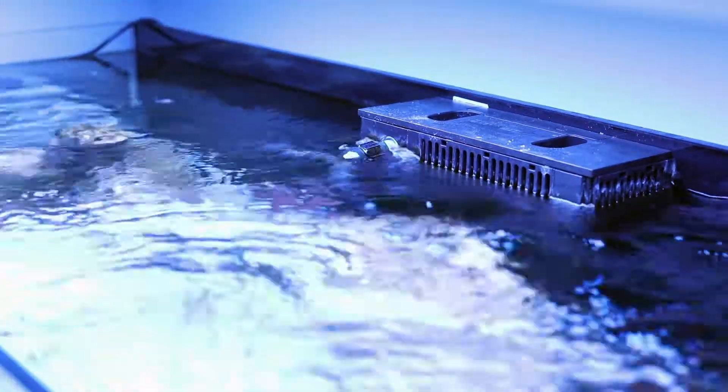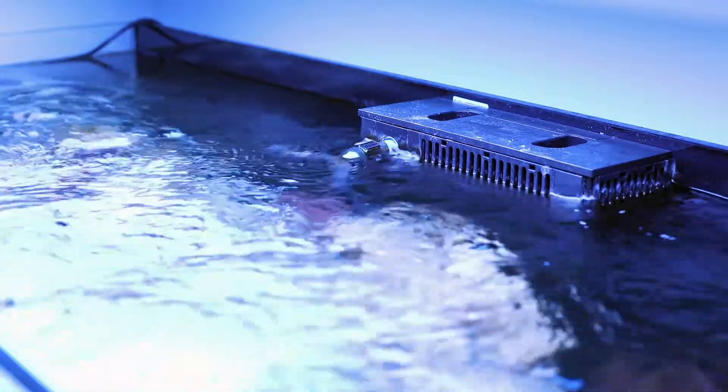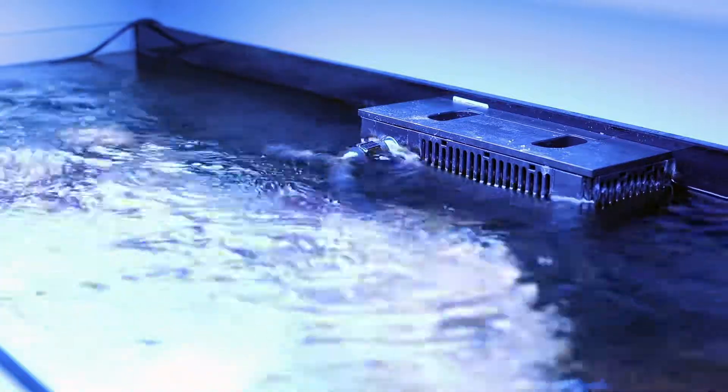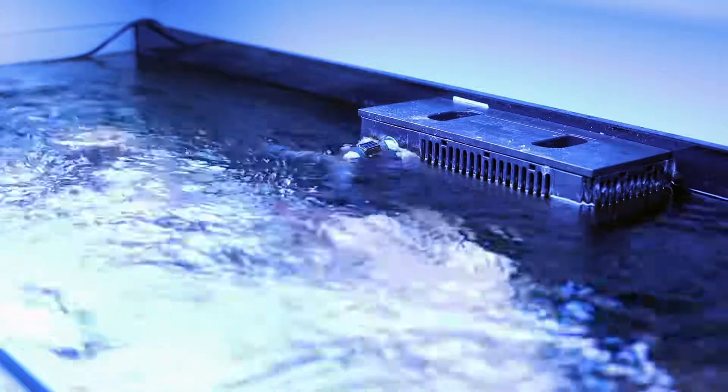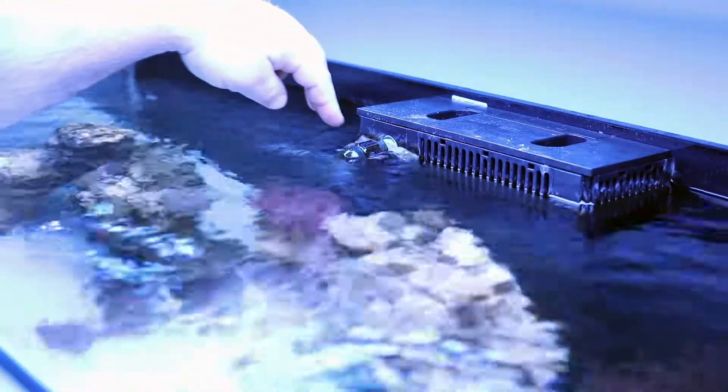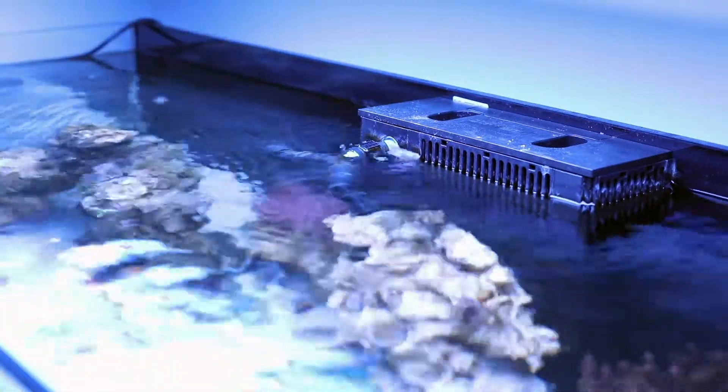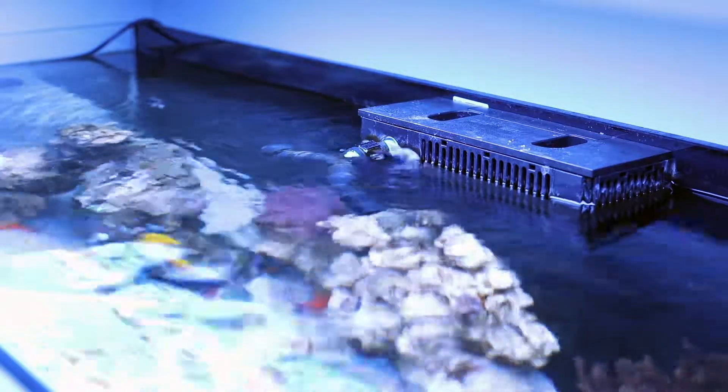I'm going to show you what happens. We're going to simulate a power outage right now. First, I'm going to shut off the Maxspect gyres to get rid of some water turbulence. Now that some turbulence is gone, you can see water shooting backwards through the two drilled holes. Now I'm going to shut off the return pump.